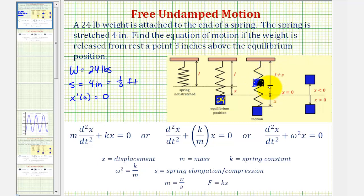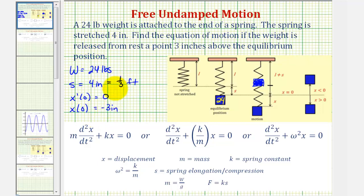Because the weight is released above the equilibrium position, x of zero equals negative three inches. If it's released above the equilibrium position we say x is negative; if it's released below, we say x is positive. So x of zero is negative three inches, and converting to feet, this would be negative three-twelfths feet, or negative one-fourth of a foot.